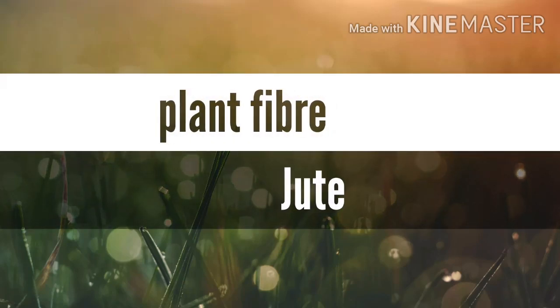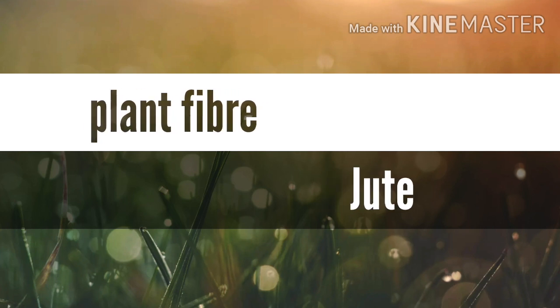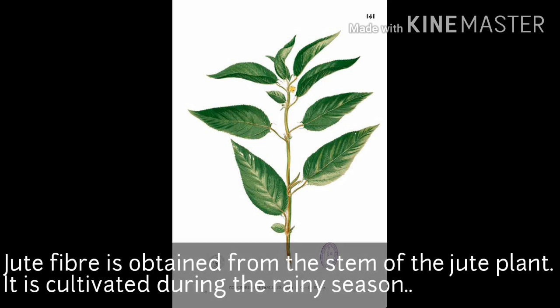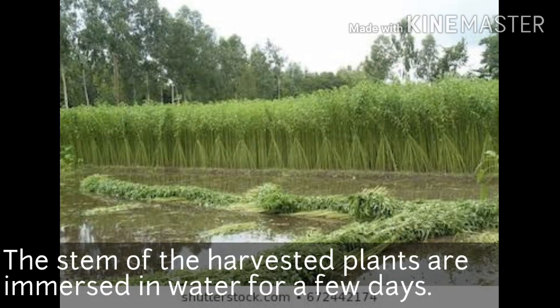Good morning everyone. Today we discuss about plant fiber jute. Jute fiber is obtained from the stem of the jute plant. It is cultivated during the rainy season. In India, jute is mainly grown in West Bengal, Bihar, and Assam. The jute plant is normally harvested when it is at the flowering stage.